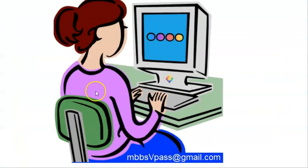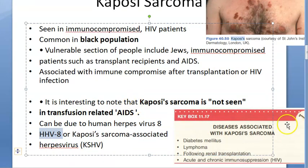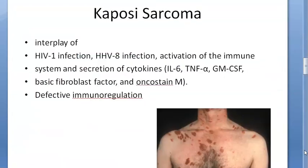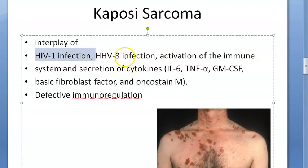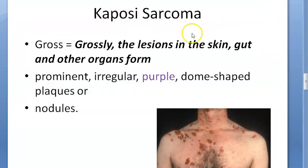HHV-8 is also called Kaposi's sarcoma-associated herpes virus. The interaction between HIV and HHV-8 activates the immune system, producing lots of cytokines, and results in defective immunoregulation. Because these patients are immunocompromised, this leads to the development of Kaposi's sarcoma.